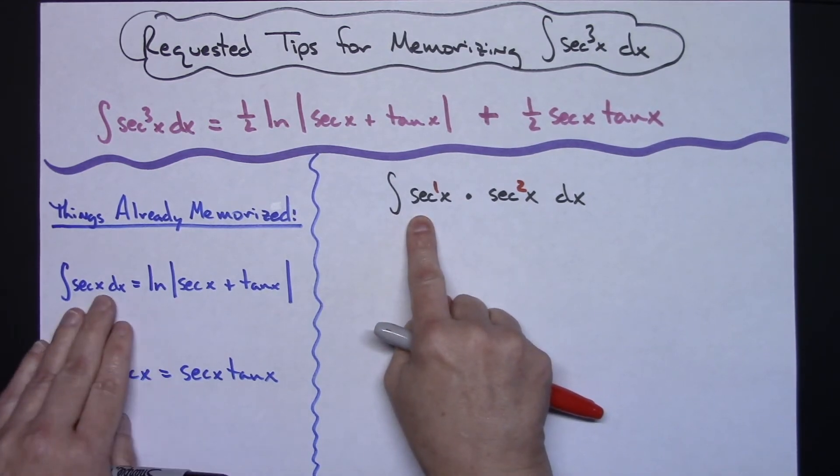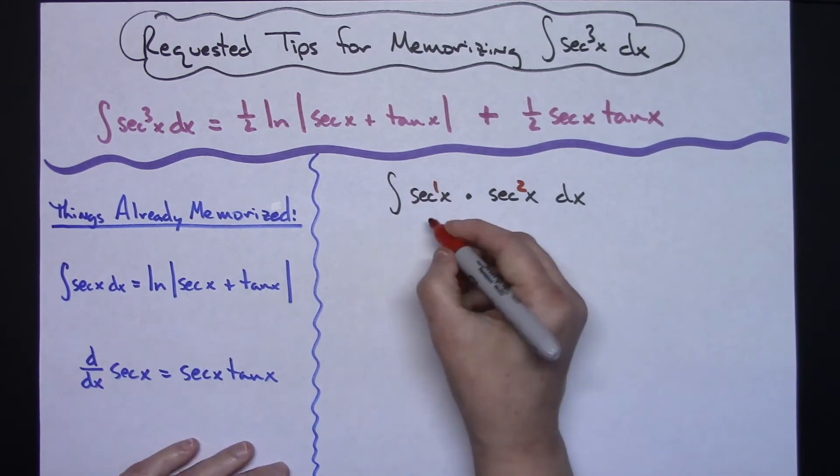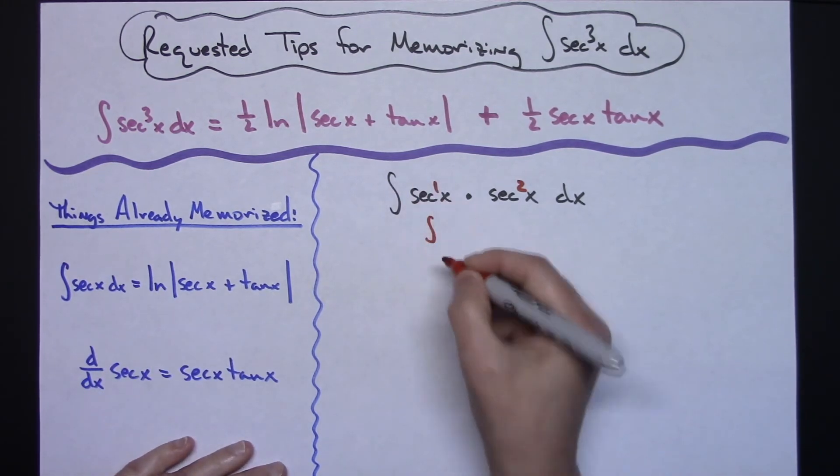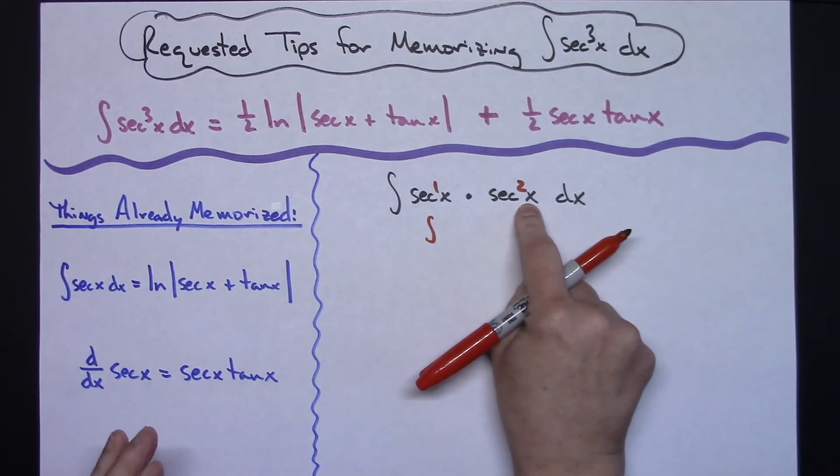Integral of secant x, if you've already got that memorized, you see that right here. So you're going to be thinking, okay I'm going to take the integral of this right here. Now I'm also going to take this secant squared x and I'm not going to think integral. I'm just going to think, okay, derivative.